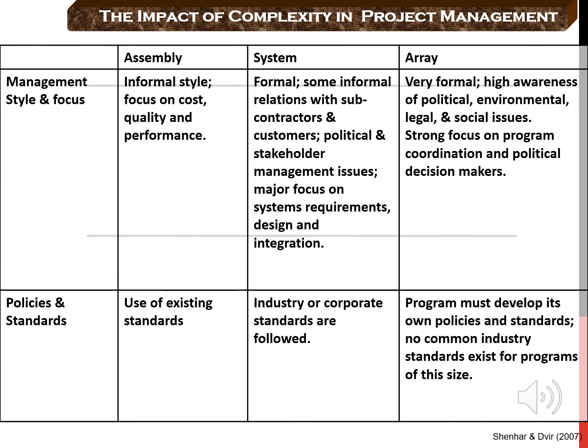The second major difference in the complexity dimension is management style and the use of policies and standards. Management style refers to the degree of formality of how we manage a project. Formality regards processes and decision-making and tends to increase with project complexity. In assembly projects, it is possible to have informal coordination because they are small, people know each other, they are usually performed within the same company, and there is little bureaucracy.